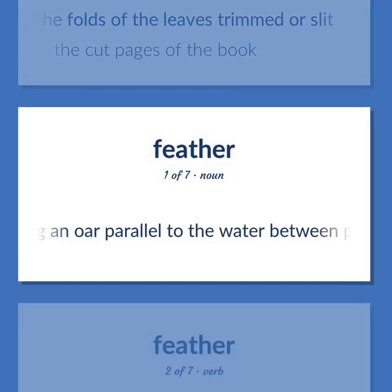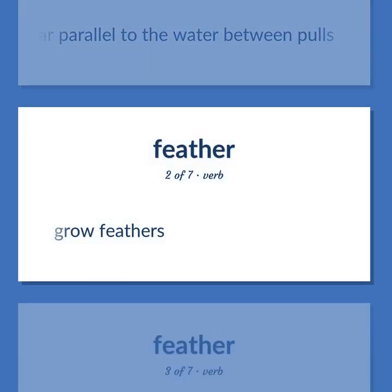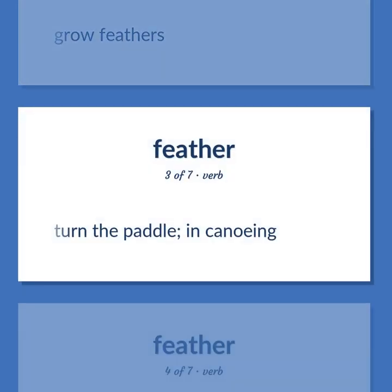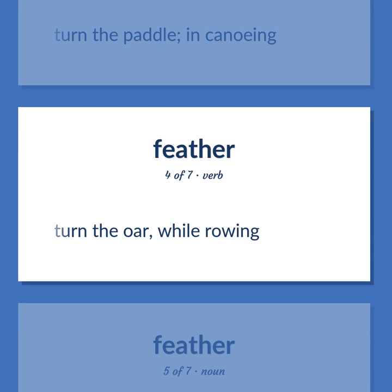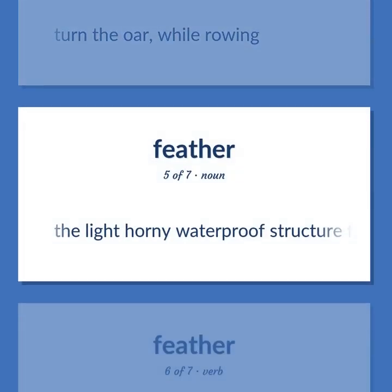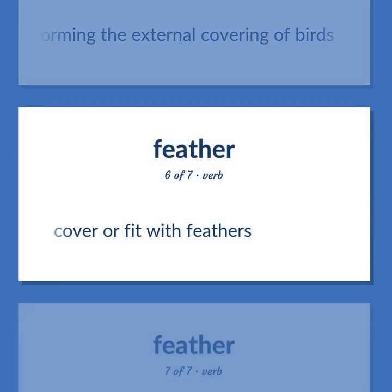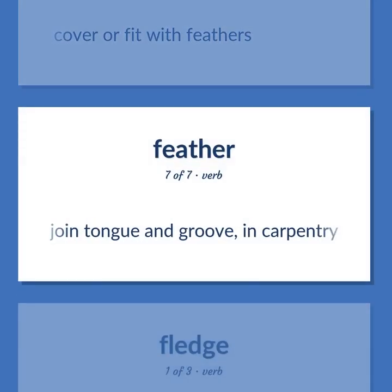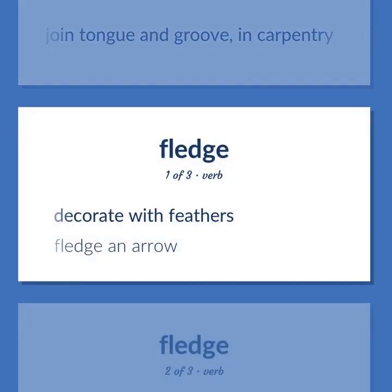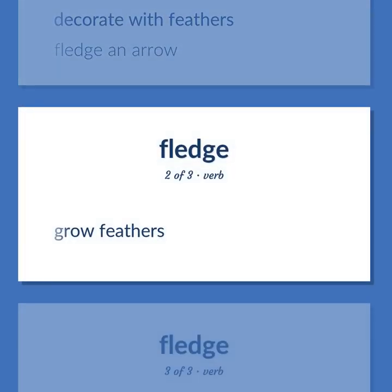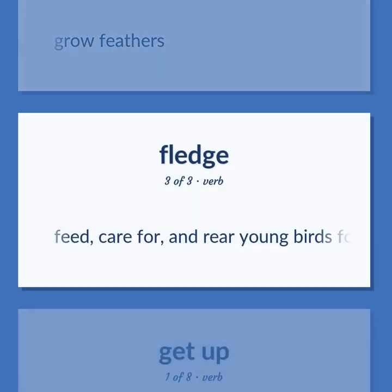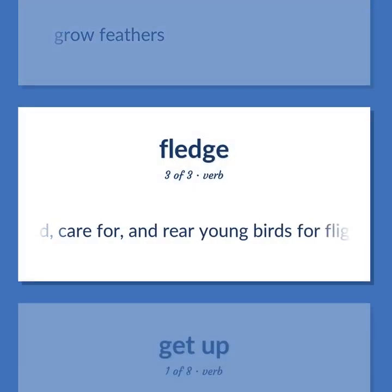Feather: Grow feathers. Turn the paddle in canoeing. Turn the oar while rowing. The light horny waterproof structure forming the external covering of birds. Cover or fit with feathers. Join tongue and groove in carpentry. Decorate with feathers — fledge an arrow. Feed, care for, and rear young birds for flight.